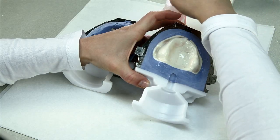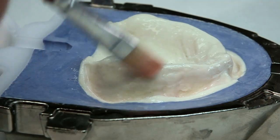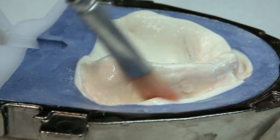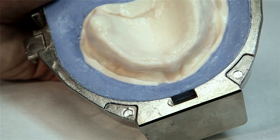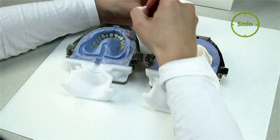Isolate the clean surfaces of the stone model using separating fluid. Prevent the material from pooling, for example in the gingivo-buccal fold. Apply a second isolation layer after 5 minutes.